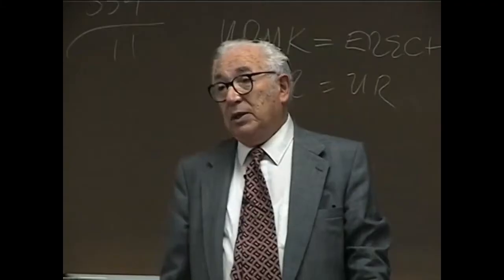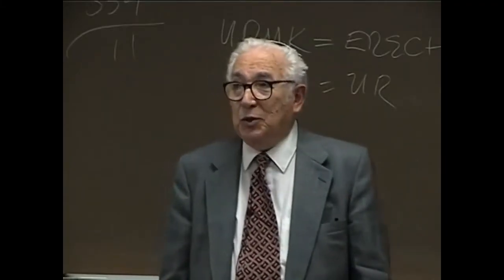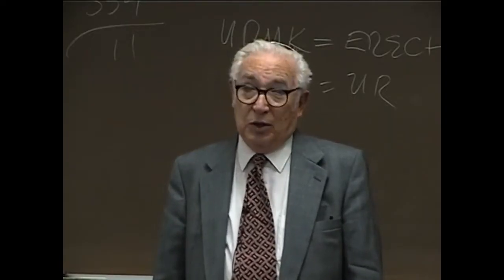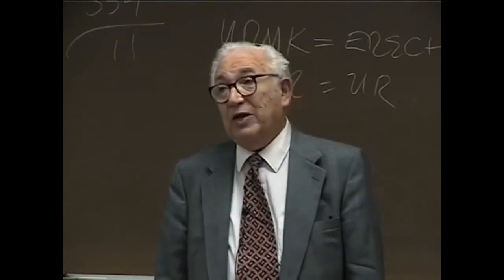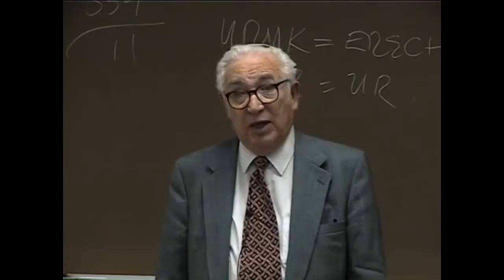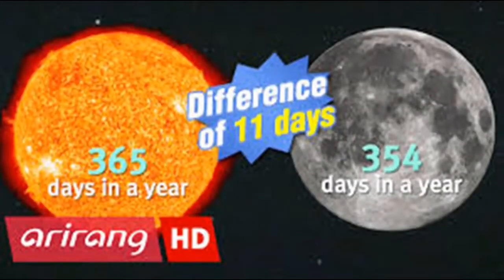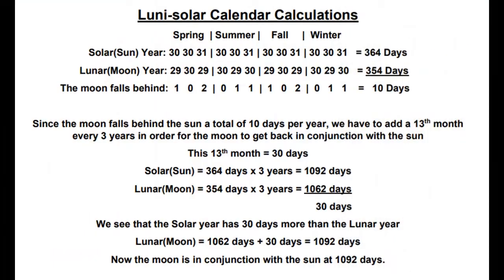The solar cycle is important because it tells you when the rains will come and when you should plant and harvest. So you really need a solar cycle, but you're already fixed on the lunar month, and your year is 11 days short. He stated the solar year has 365 days and the lunar year has 354 days, making the moon fall 11 days behind. But when you look at this calendar, the solar year has 364 days, and the lunar year 354 days — the moon falls behind the sun 10 days every year.